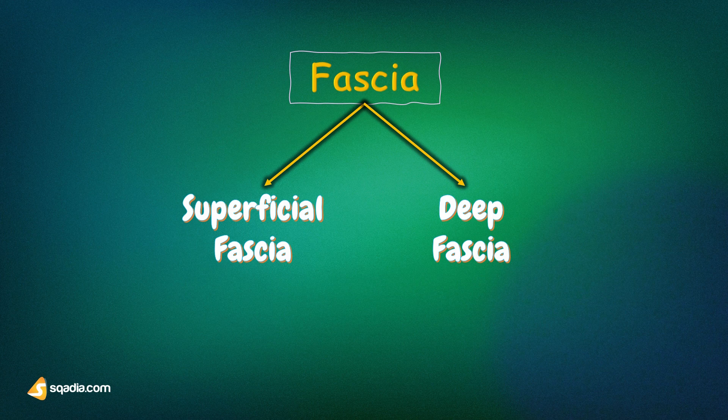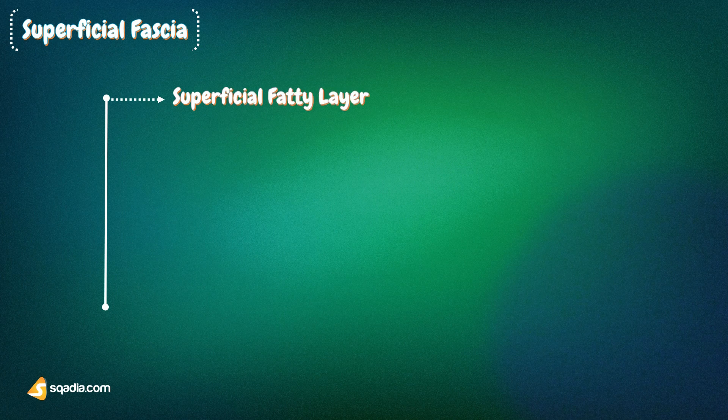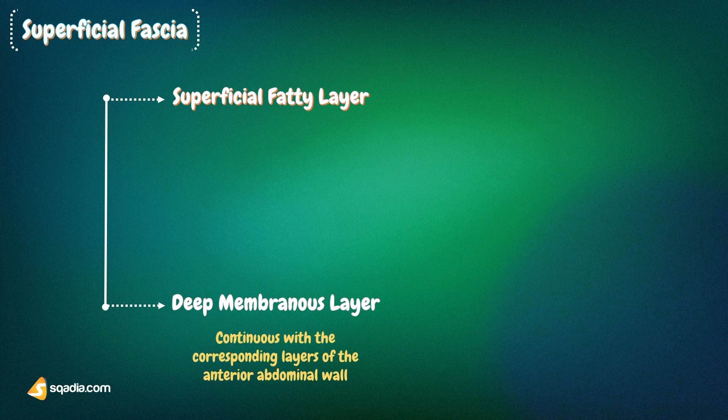The superficial fascia has two layers: a superficial fatty layer and a deep membranous layer, which are continuous with the corresponding layers of the anterior abdominal wall. The two layers are most distinct in the uppermost part of the thigh, near the groin, where the cutaneous nerves, vessels, and lymph nodes lie between the two layers.